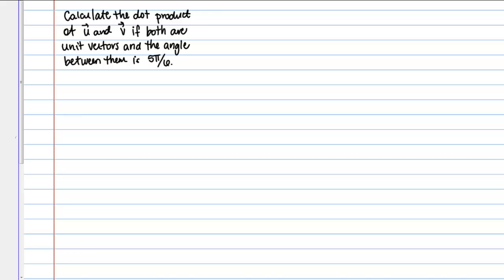First of all, what's the definition of the dot product that we would use here? The dot product of vectors U and V is defined as the magnitude of U times the magnitude of V times the cosine of theta where theta is the angle between them.